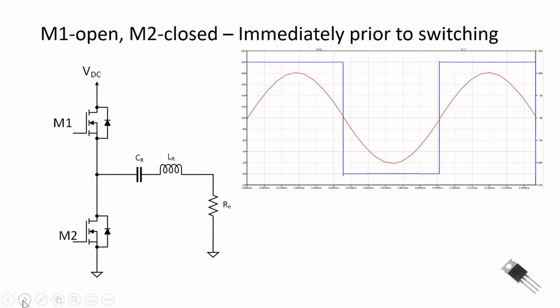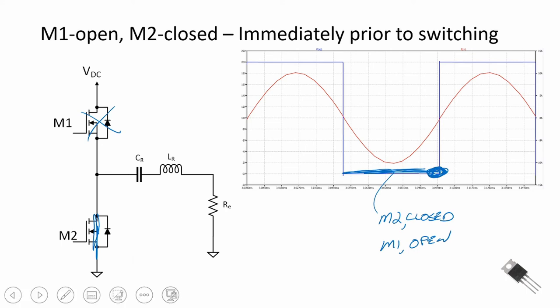Let's look at the case now where M1 is open, M2 is closed. This is the case where M2 is closed and M1 is open. And right before the switching event, right before this event of switching, we see that the current is nearly zero through the load.